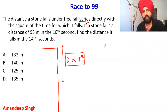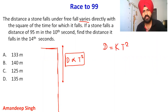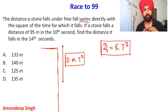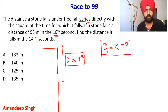So this condition gives us: distance d is equal to k times t squared. Here d is the distance fallen in the t-th second. The question states the stone falls a distance of 95 meters in the 10th second. Now what we have written is that the distance varies directly with the square of the total time.